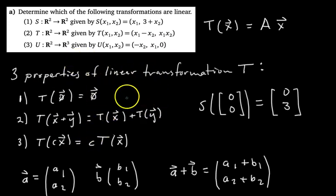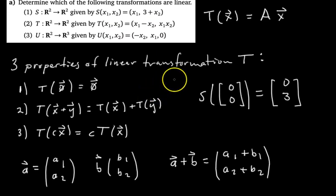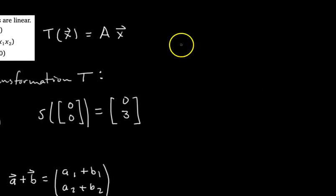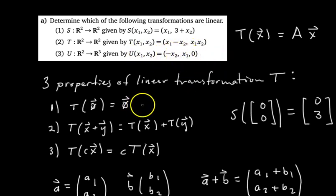Let's do the last one, part three, transformation U. It takes input vectors in R2 and transforms them into R3, where your input vector is (X1, X2). Does it meet the first condition? If we input (0, 0) for X1 and X2, do we get the zero vector as output? Yes — if X1 and X2 are both zero, our output vector is all zeros. So it meets the first condition.